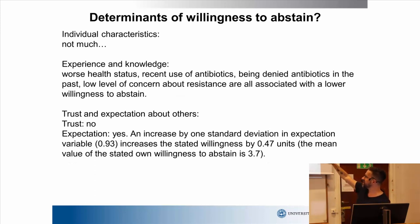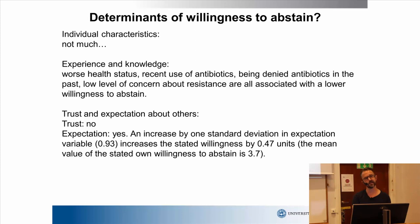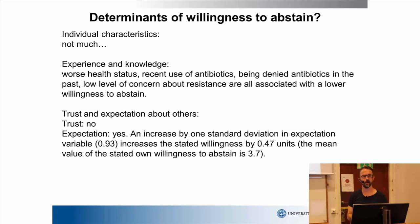We're not super interested in the distribution of responses itself. Instead, what we're interested in is: can we explain the distribution? Who is very unwilling and who is very willing? Are there individual characteristics, past behaviors, or other factors that can explain what people respond here? That's our main interest.